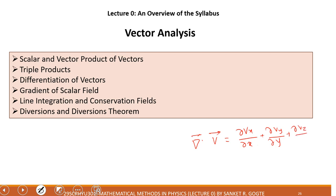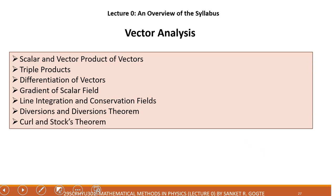Each term is the partial differentiation of a component with respect to its own coordinate — so vx with respect to x, vy with respect to y, and vz with respect to z. These are scalar fields, so the divergence of any vector is a scalar. We will discuss this in detail. Next is curl and Stokes' theorem, which is another type of differentiation operation that can be performed with vectors.